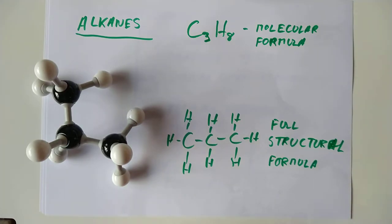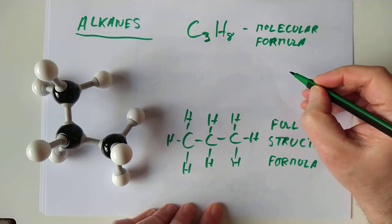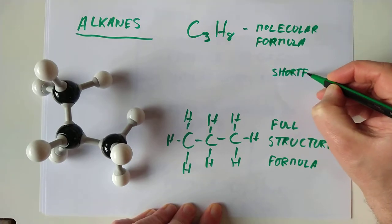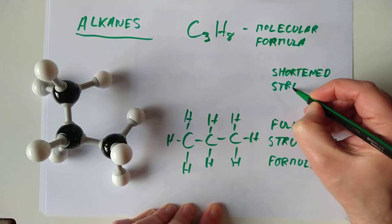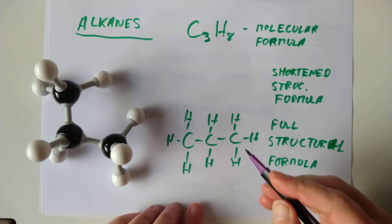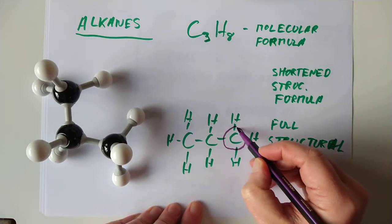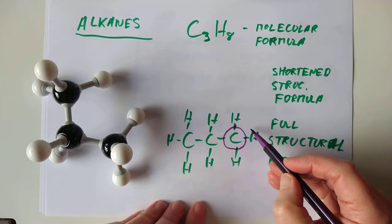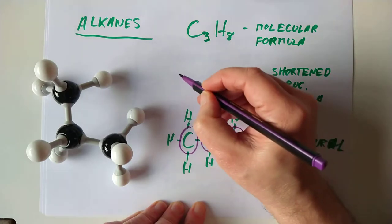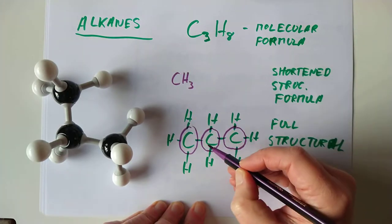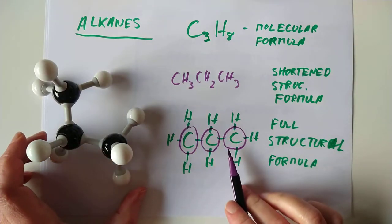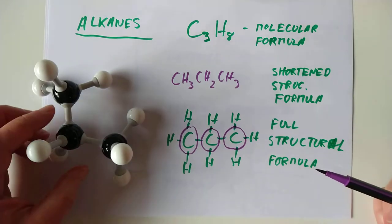There is a halfway house between the molecular formula and the full structural formula called a shortened structural formula. If we draw a circle around each carbon: the first is attached to three hydrogens, the second to two, and the third to three. So we write CH₃, then CH₂, then CH₃. That's a lot faster to draw and also shows you more detail — that's why it's called a shortened structural formula.